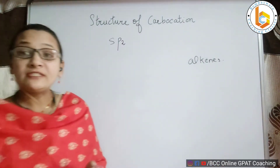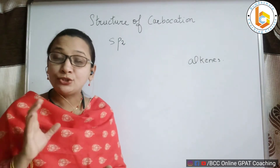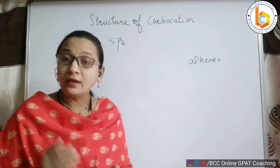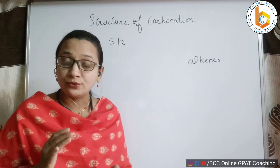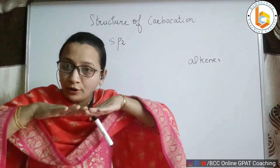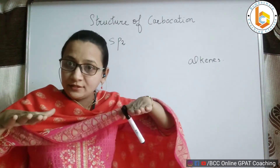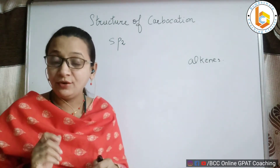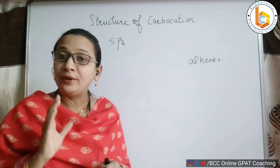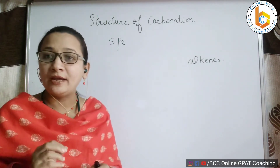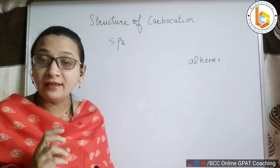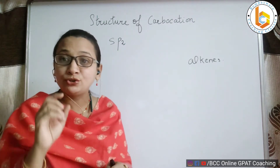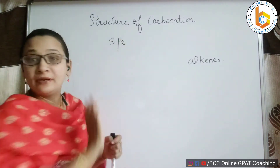We have said about alkenes that they show triangular geometry. In the same way, carbocation also shows planar geometry — the structure is planar, the geometry is triangular, with a bond angle of 120 degrees. Please have a look at the structure of carbocation and how it shows sp2 hybridization.